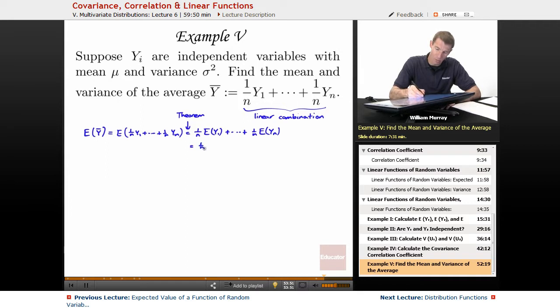And so that's 1 over n times E of y, up to 1 over n times E of y. And so if you add up n copies of 1 over n times E of y, you just get a single copy of E of y. So that's my expected value of the average.